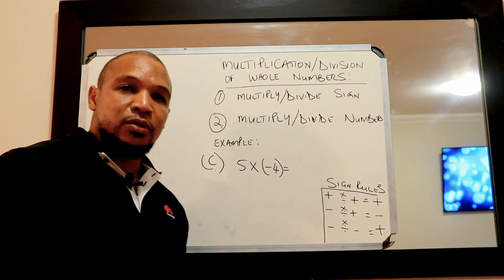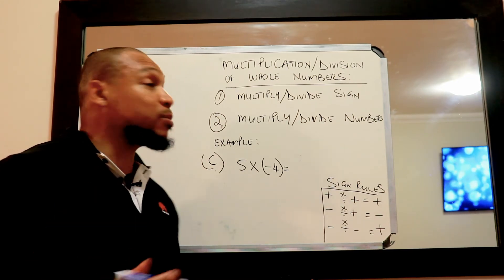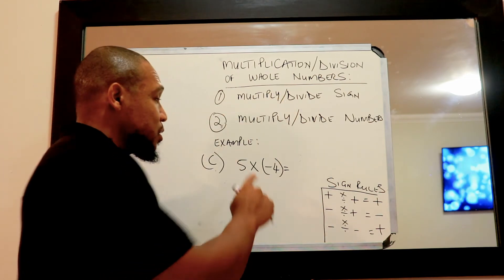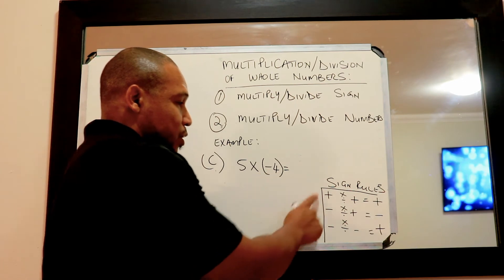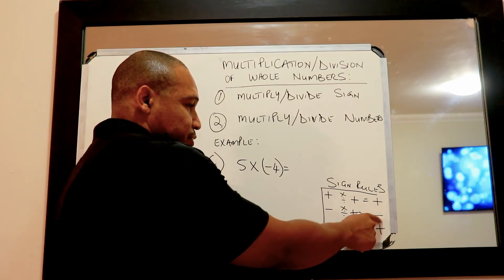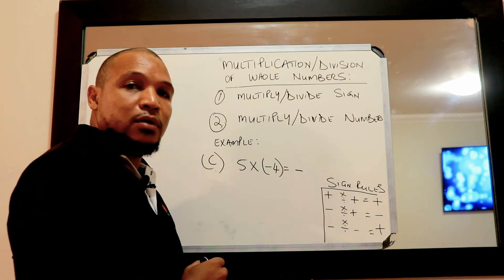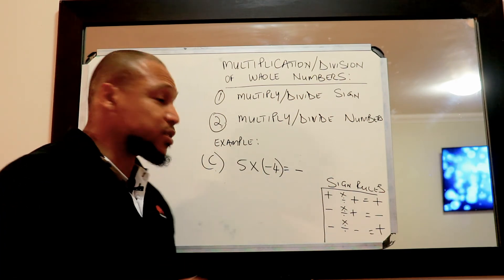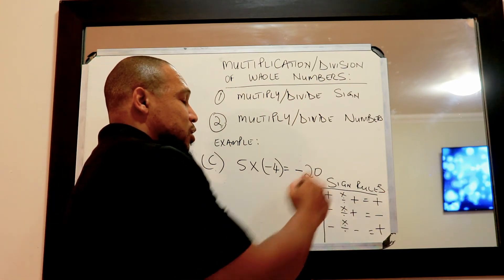Let's have one more example: five multiplied by negative four. Step one, multiply the sign — here we have a positive and here we have a negative. Our rule says a positive and a negative gives a negative outcome. Step two, multiply the numbers: five times four is equal to twenty. So our answer is negative twenty.